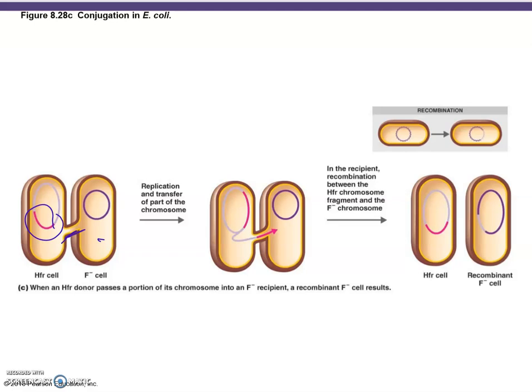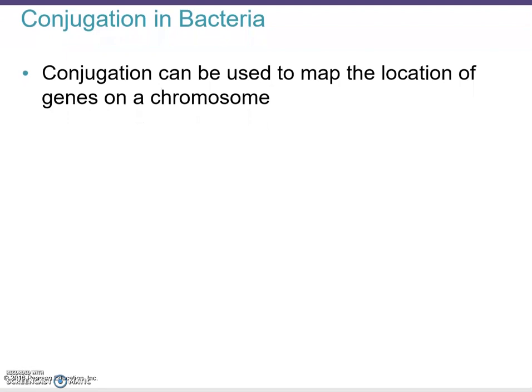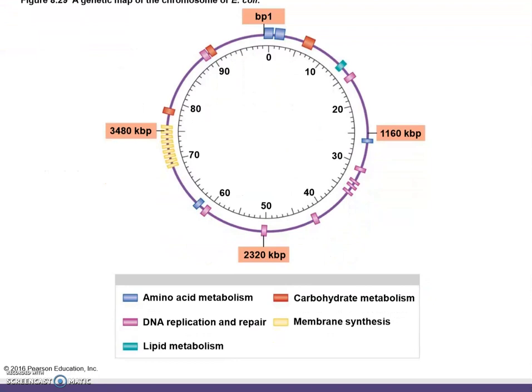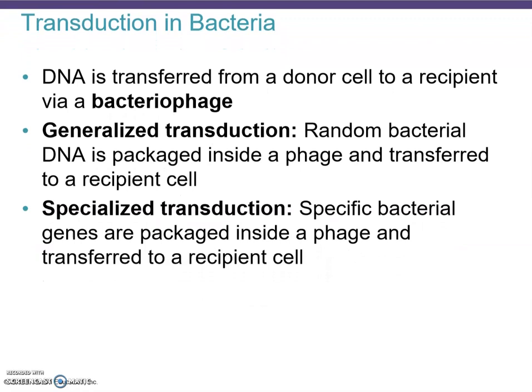Conjugation in bacteria can also be used to map the location of genes on a chromosome. Here you can see a map of E. coli with several markers placed at various positions. Now moving on to transduction in bacteria.